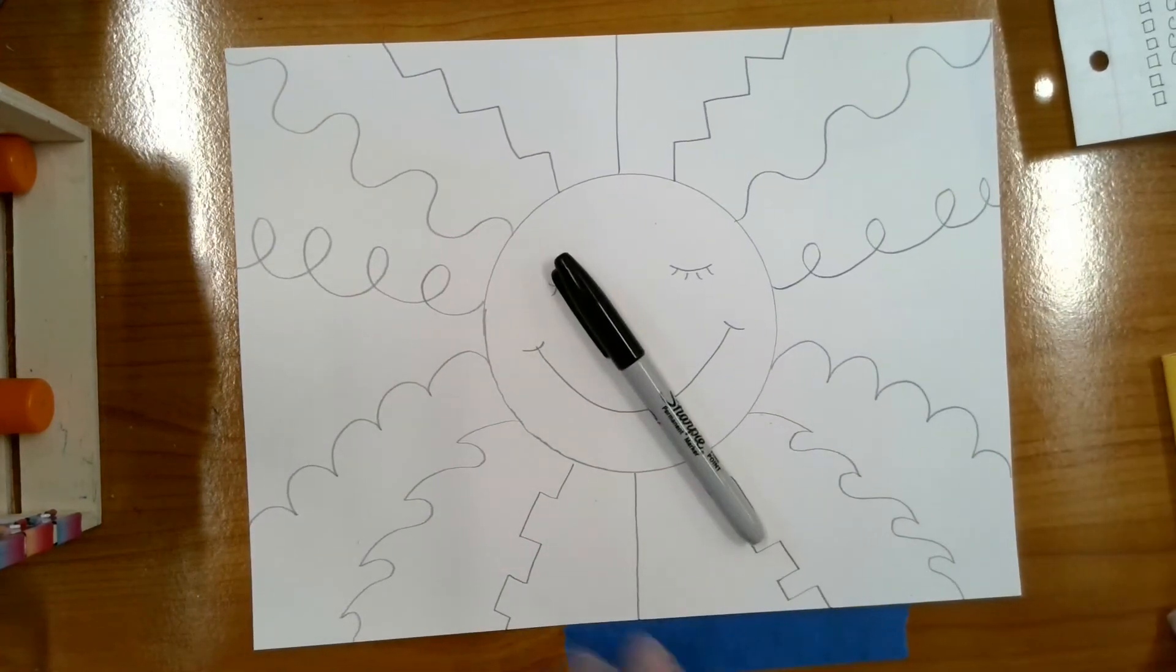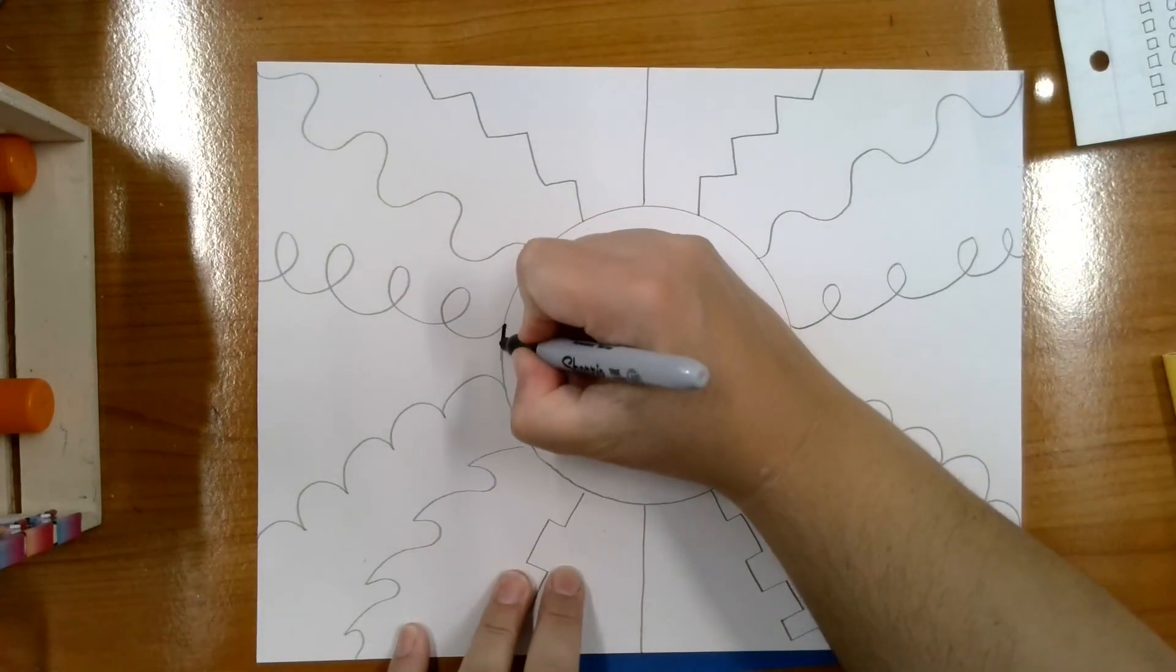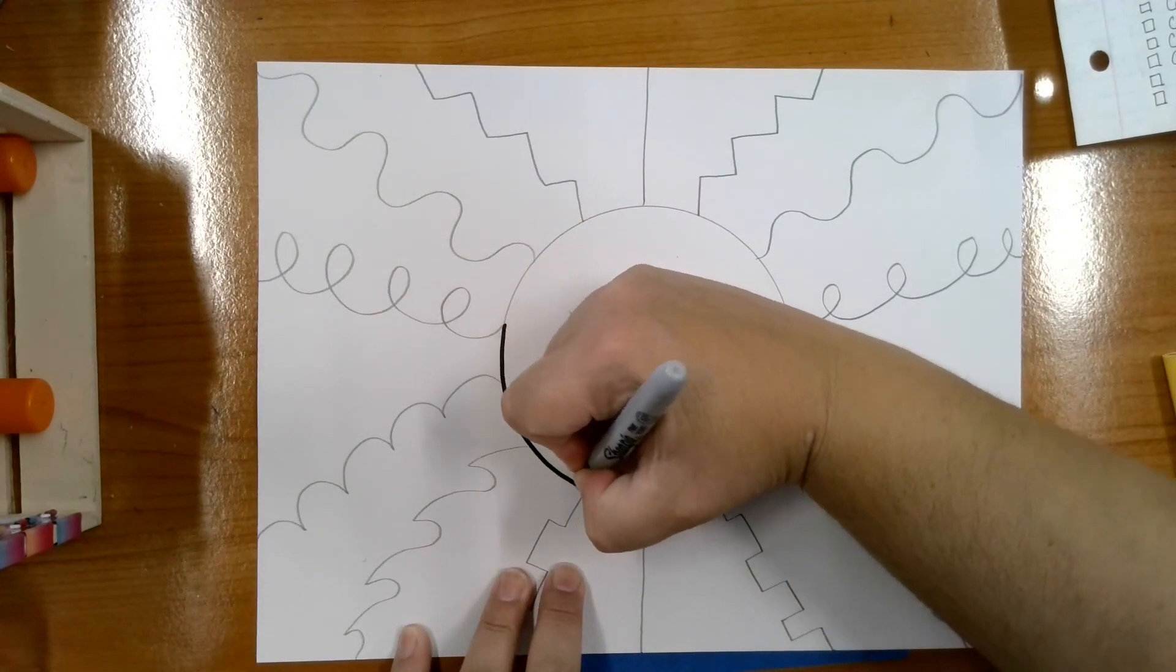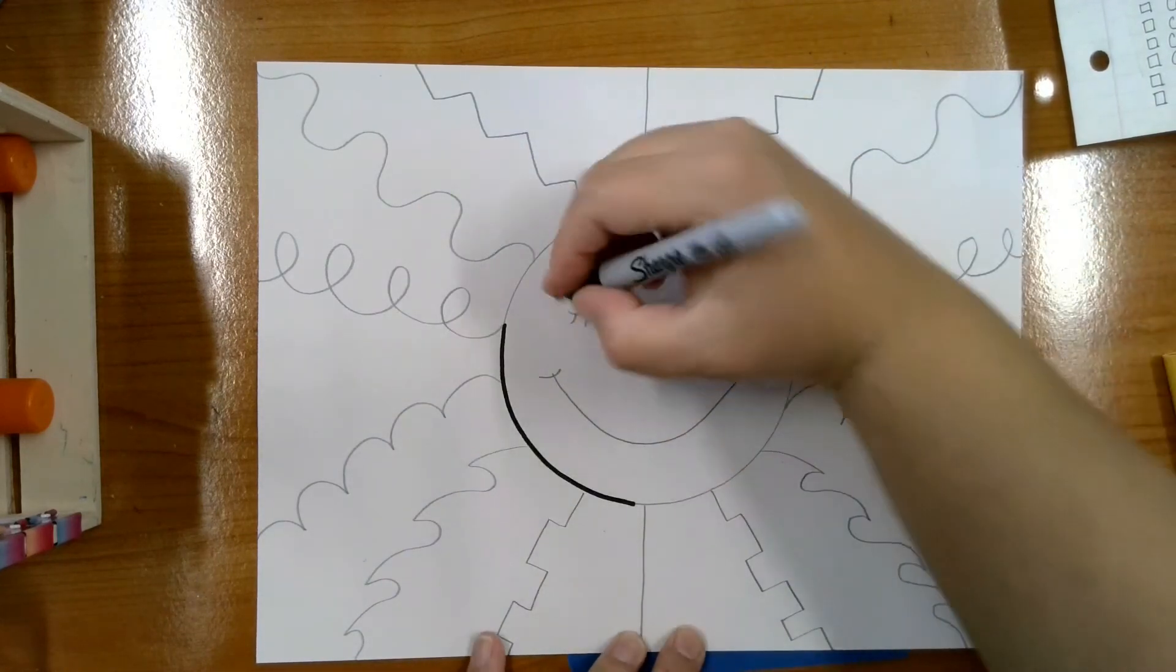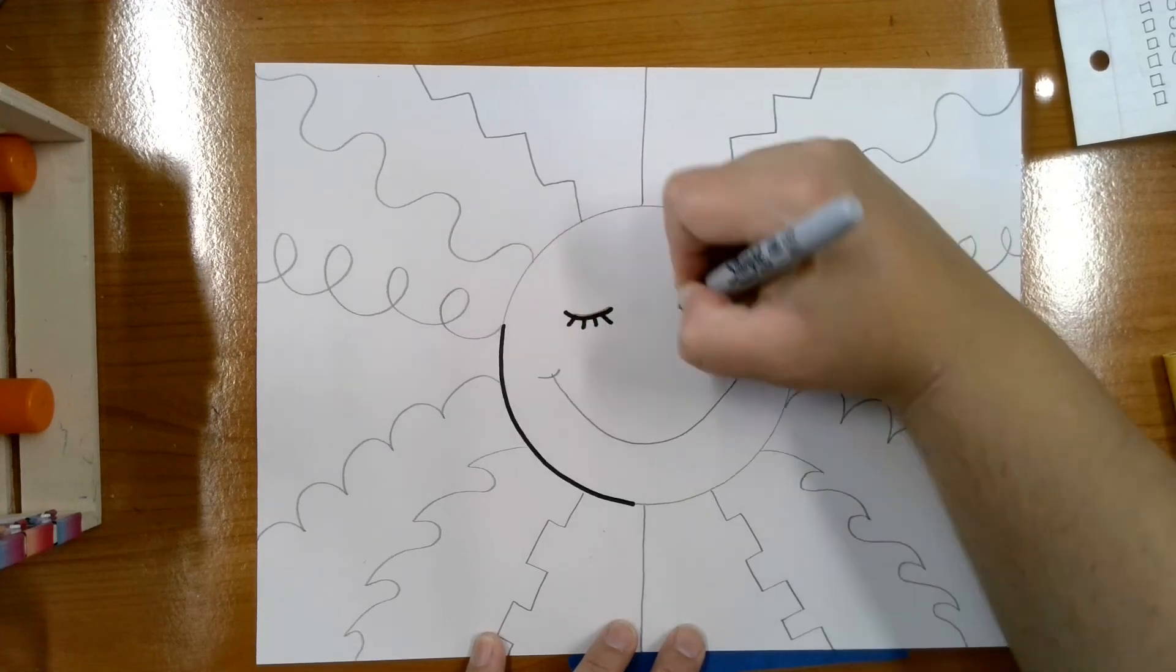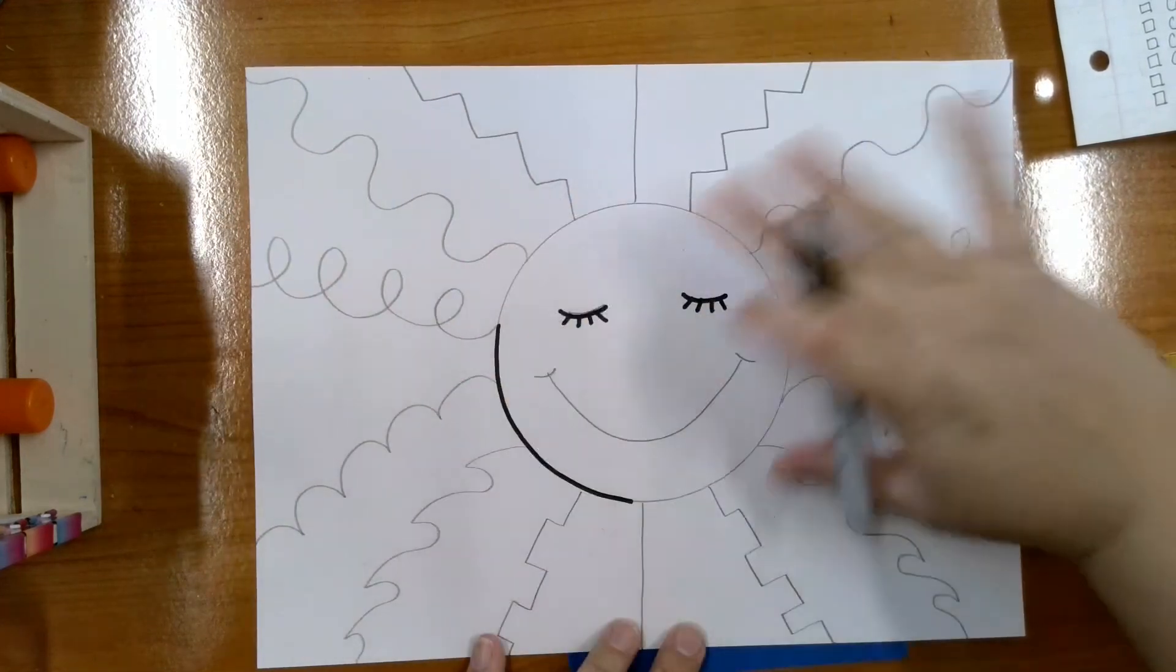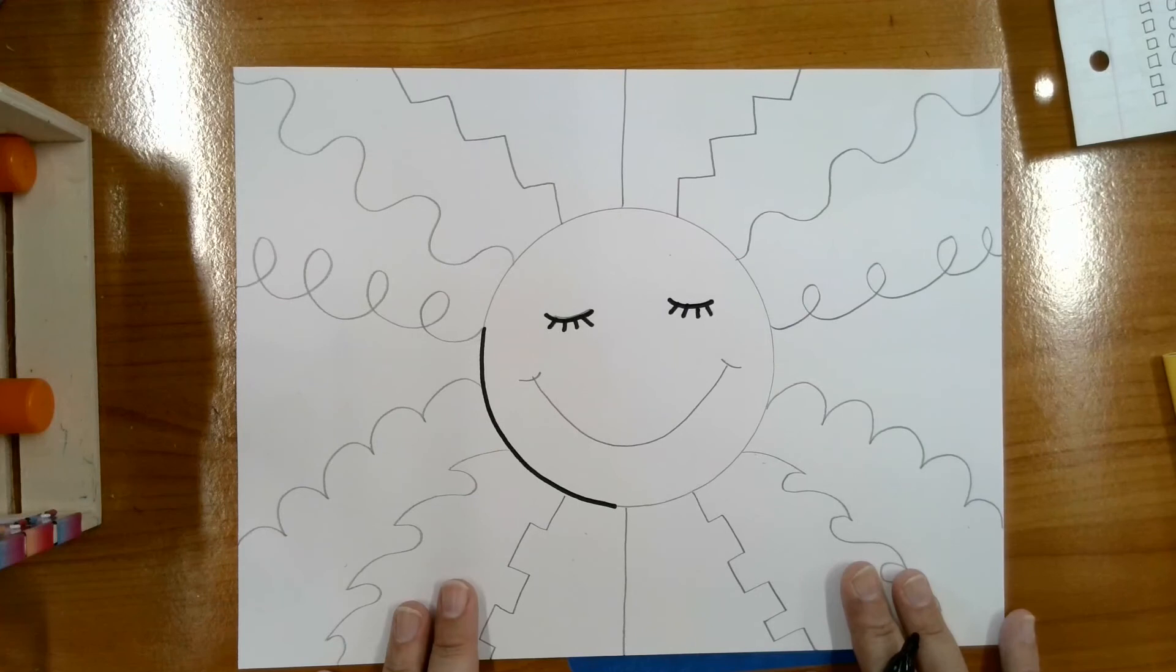Then you're going to use your Sharpie marker and you're going to carefully trace over the top of all of your pencil marks until you are done tracing everything. So make sure you trace all of your lines. Trace your face. Trace your circle. When you've traced every single thing, am I done? No, I'm not done, but I'm not going to trace the whole thing for you.